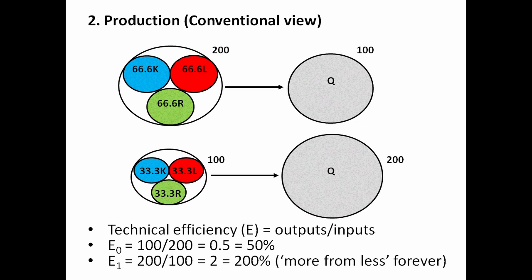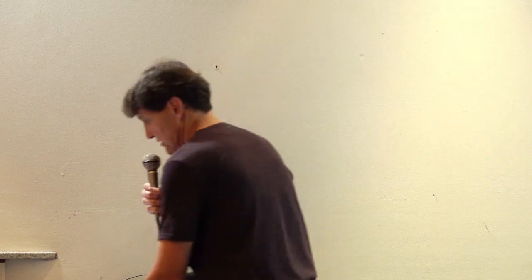It would be argued that through technological progress you could produce more output — say 200 units — with fewer inputs. You might halve the inputs and double the outputs, in which case the technical efficiency of production would rise to 2, or 200%. And it's assumed you can keep doing this forever: the inputs can get smaller and smaller, the output larger and larger — always producing more from less through technological progress.